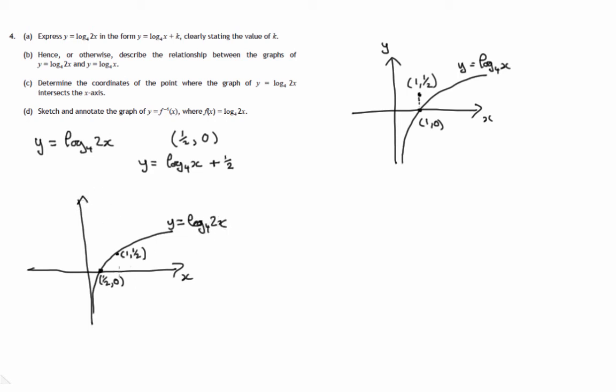And we want the inverse of this log, of this graph. The inverse graphs, you're swapping the roles of x and y. And the inverse graph can be obtained by flipping the graph in y equals x. So the graph of y equals log to the base 4 of 2x with these two known points can be flipped. This point goes up to there and this point will go to there. And we'll get a typical exponential graph, which is the inverse graph. So this is the graph of y equals f to the minus 1 of x, where f of x is equal to log to the base 4 of 2x.